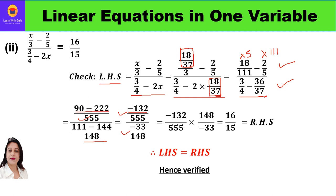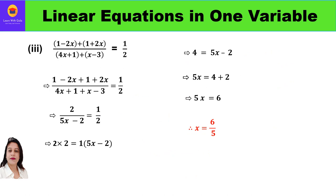We have a fraction divided by a fraction, so multiply by the reciprocal: minus 132/555 times 148/(minus 33). Simplifying and cancelling the minus signs, we get 16/15, which is the right hand side. So left hand side equals right hand side — verified that x equals 18/37.